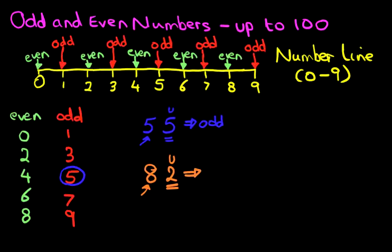Now is two an odd number or an even number? Well, two is an even number. Here it is. Therefore, if two is an even number, then 82 is also an even number.